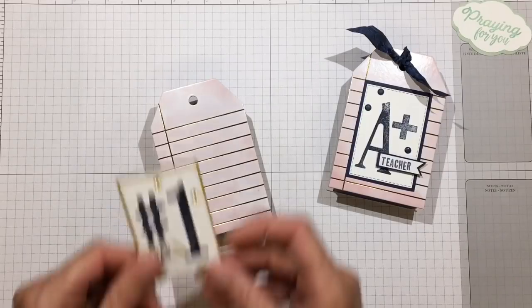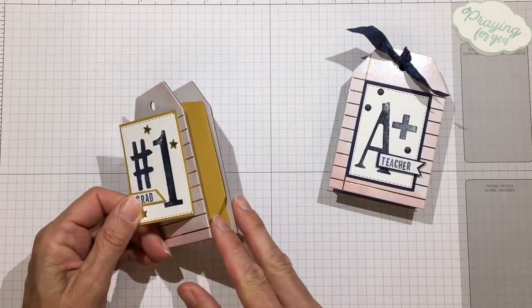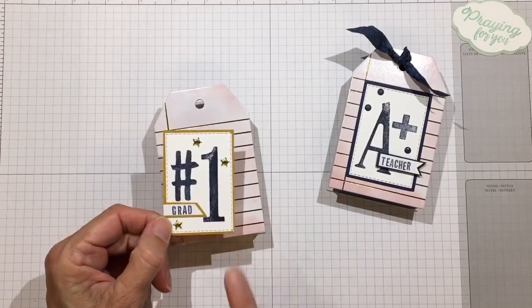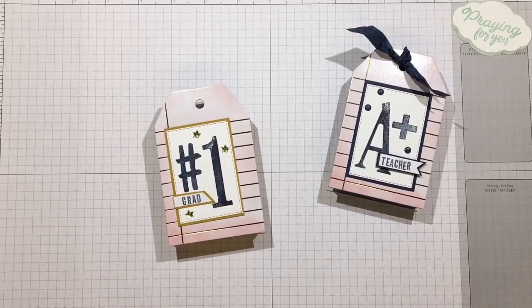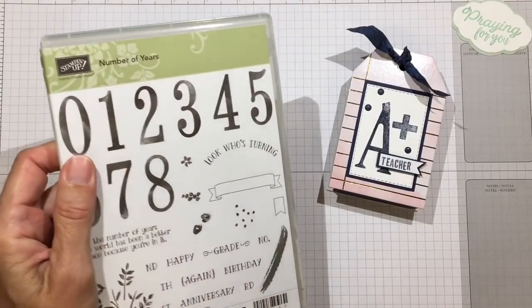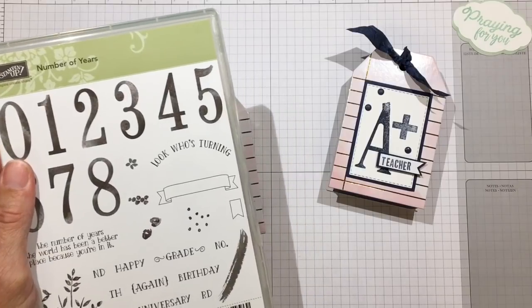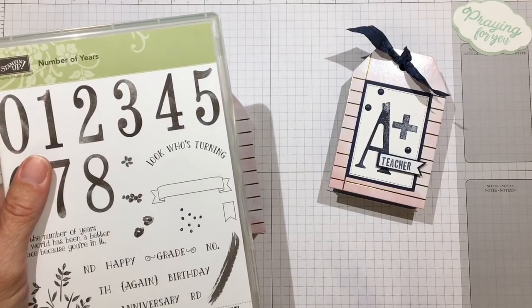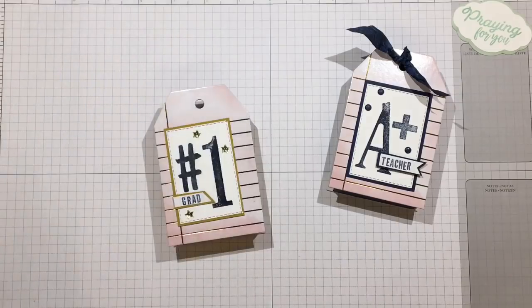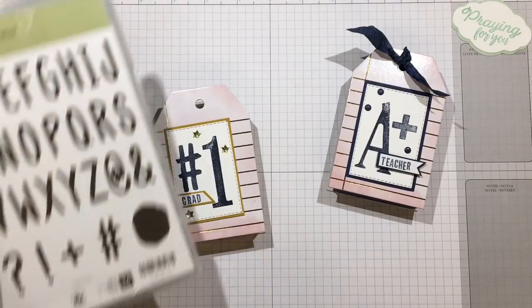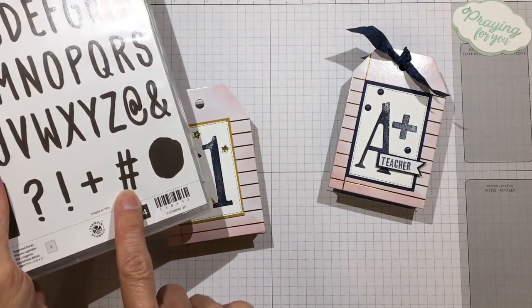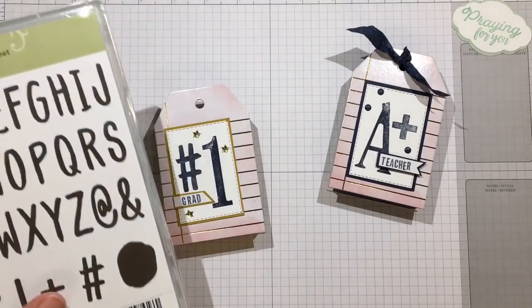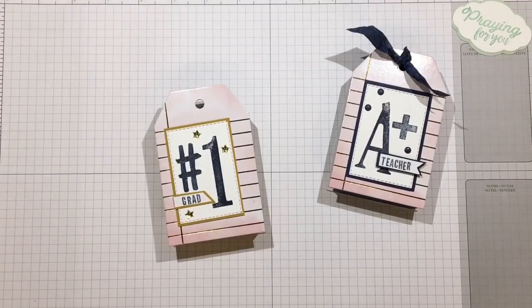For my grad one, which I'm doing next because my grad's colors are blue and gold, I went ahead and used the one from the Number of Years set, but I didn't have an octothorpe, the pound sign, the hashtag, the number sign from the same stamp set, so I had to use that one from the Layered Letters alphabet.